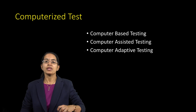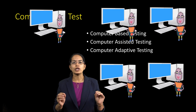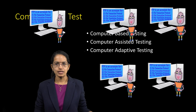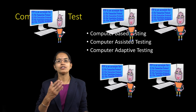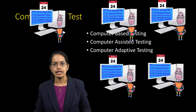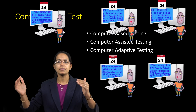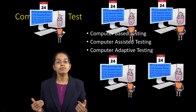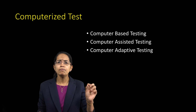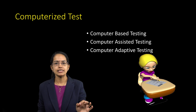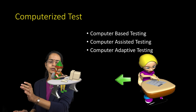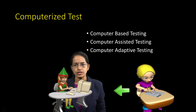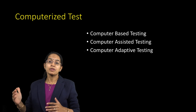A modification of the computer-assisted test is the computer-based test, and further to that is the computer-adaptive test. Under a computer-based test, the NTA examination is a good example — you have the same paper, just on a computer rather than on paper. All those appearing on the same day have the same questions in the same sequence. It is simply a replacement of a paper-and-pencil test with a computer system.